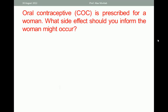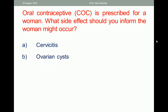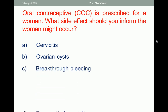Let us start with the first question. Oral contraceptive is prescribed for a woman. What side effect should you inform the woman might occur? A. Cervicitis. B. Ovarian cysts. C. Breakthrough bleeding. D. Fibrocystic breast disease.